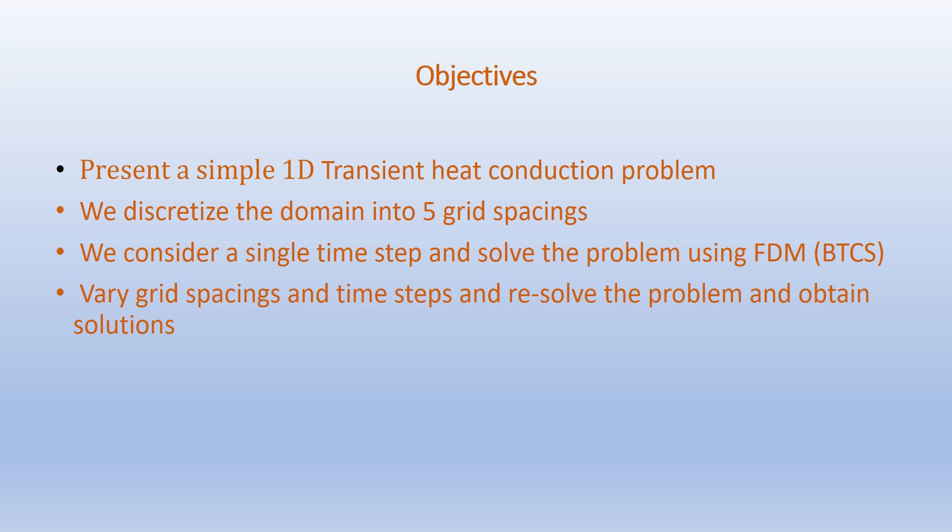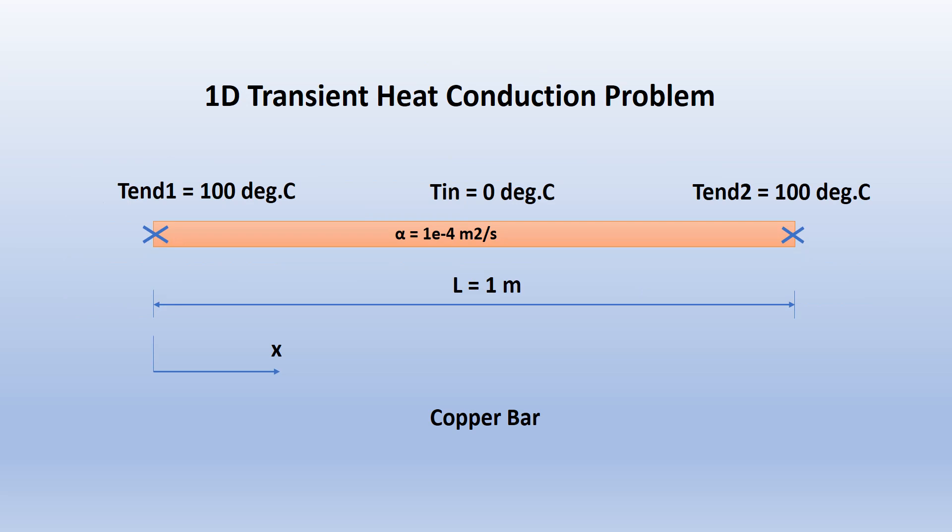We have a 1 meter long copper bar. The bar is initially kept at 0 degrees Celsius. At time t equals zero, both ends of the bar are maintained at 100 degrees Celsius. The material property thermal diffusivity alpha equals 1×10⁻⁴ meter squared per second.